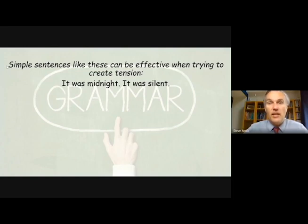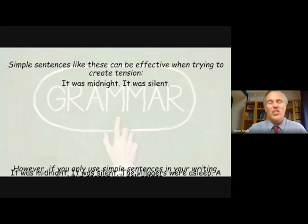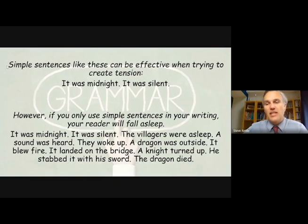But if that's all you use is simple sentences, there's a danger you can send your readers to sleep. Like in this example here: It was midnight. It was silent. The villagers were asleep. A sound was heard. They woke up. A dragon was outside. It blew fire. It landed on the bridge. A knight turned up. He stabbed it with his sword. The dragon died. So you've got a nice narrative there, but boring. So now we need to develop our type of sentences to make it more interesting.